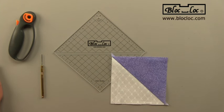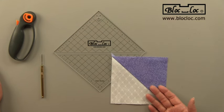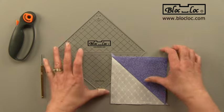Okay, so let me show you how you work with Block Lock rulers. First, you're going to need to make your half square triangle using your preferred method and you need to press your seams to one side.